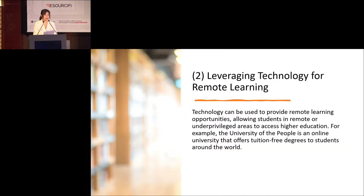The second solution: leveraging technology for remote learning. Technology can be used to provide more learning opportunities, allowing students in remote and underprivileged areas to access higher education. For example, the University of the People is an online university that offers tuition-free degrees to students around the world.